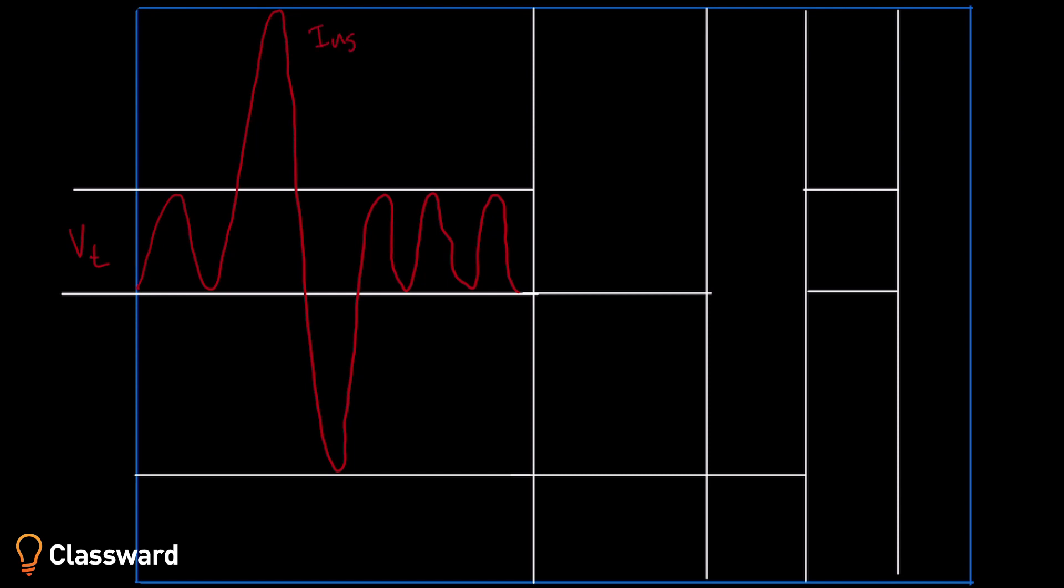The next thing we're going to define here is inspiratory reserve volume. This is the amount of air that's forcibly inhaled after a normal tidal volume. Inspiratory reserve volume is something you really only use during deep breathing.